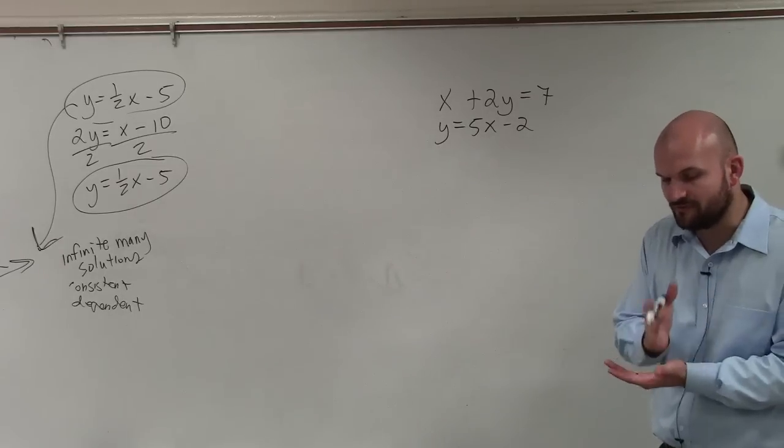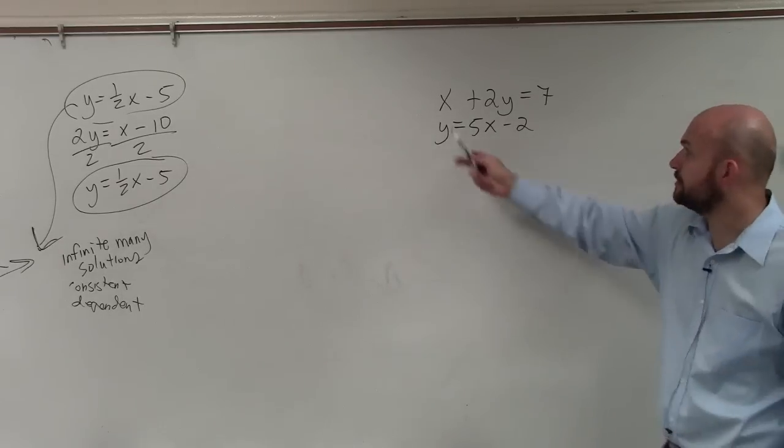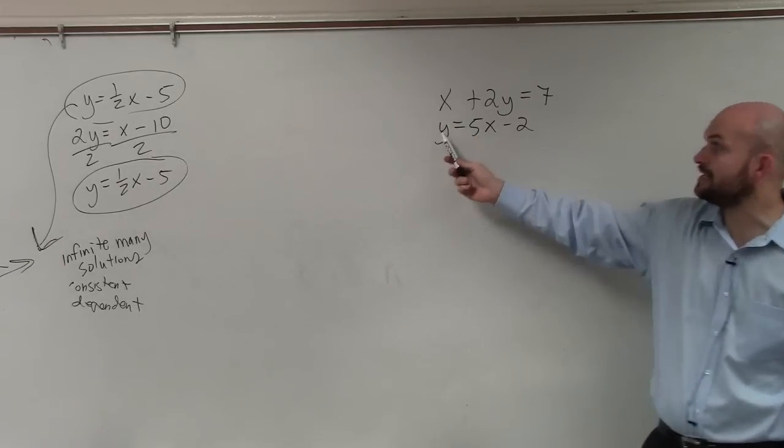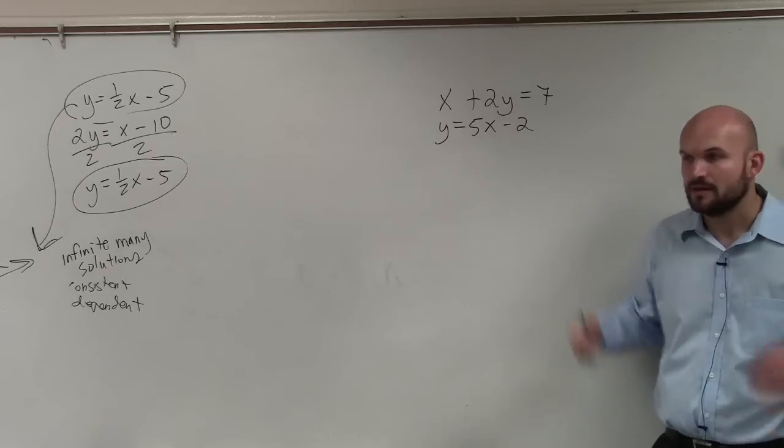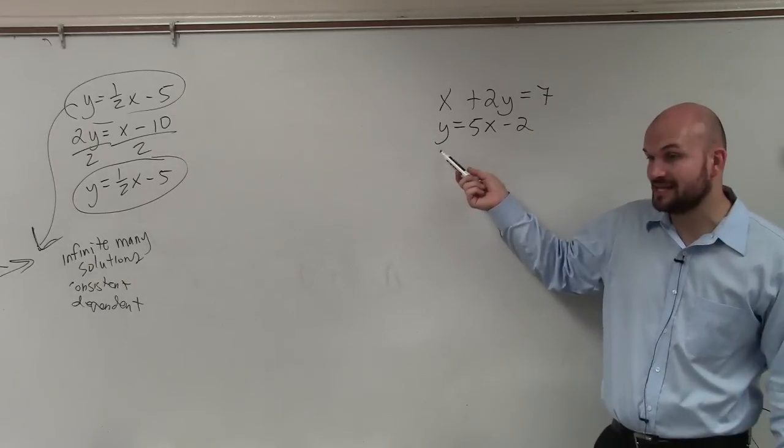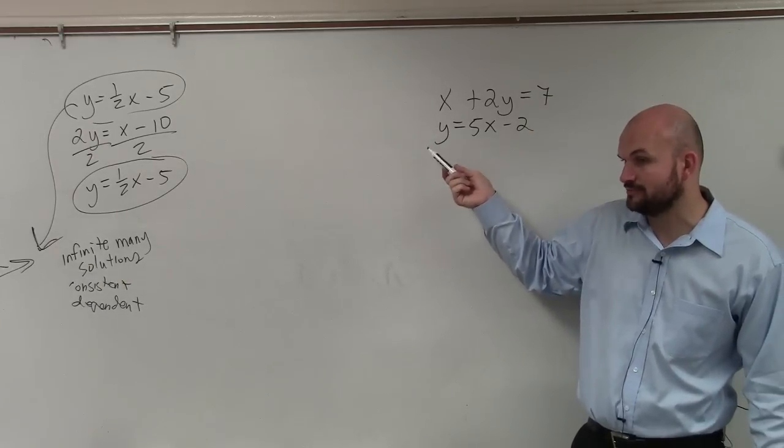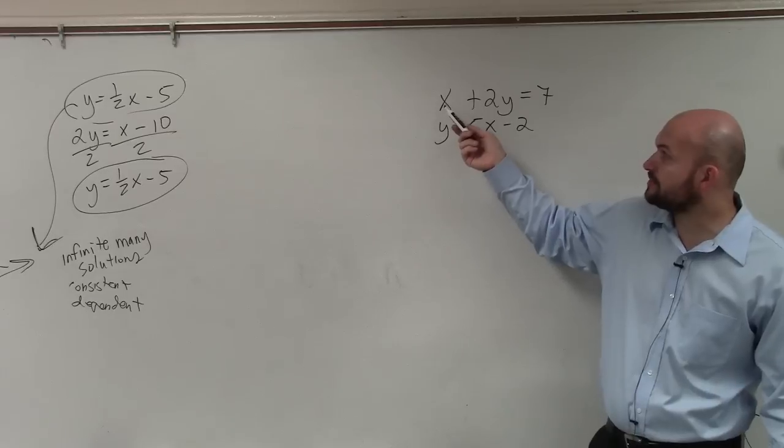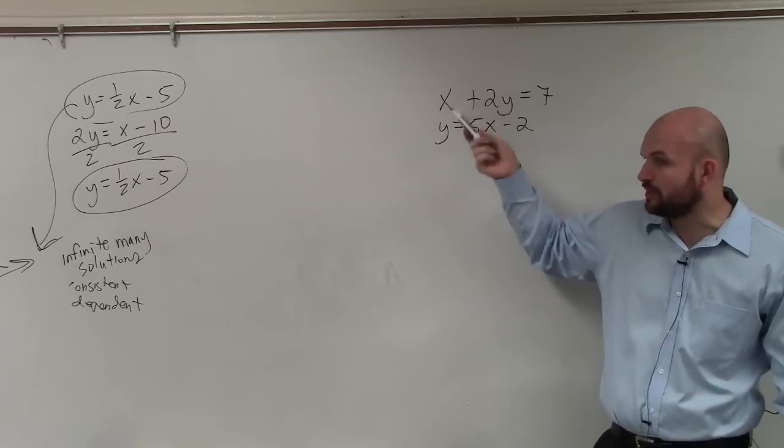So basically what we're doing is we're looking for a variable that has a coefficient of 1. You can see here I have x as a coefficient of 1, and here this y has a coefficient of 1. Now, when applying substitution, whenever you have a variable that's already isolated, you're going to want to use substitution. Or whenever there's a variable that has a coefficient of 1, that's when you want to use substitution.